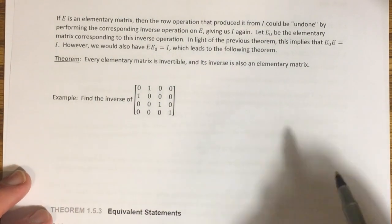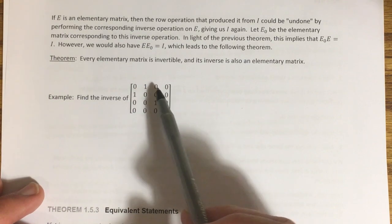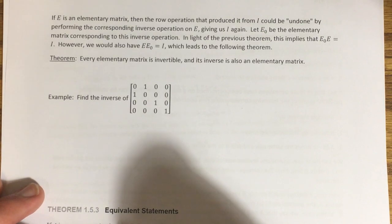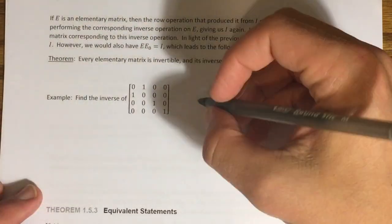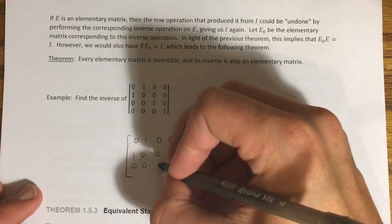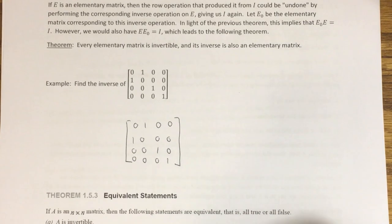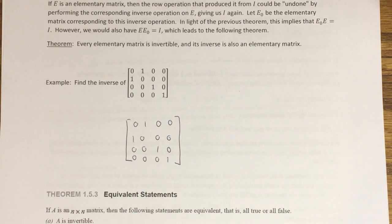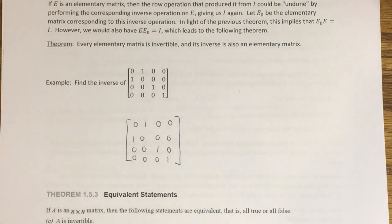Let's find the inverse of a given 4×4 elementary matrix. This elementary matrix came from interchanging the first two rows of the 4×4 identity matrix. To undo this operation, you reverse those same two rows. If I perform that inverse operation on the identity matrix, I get back the same matrix — it looks identical. So this is an interesting example showing that this particular elementary matrix is its own inverse. You can verify this by multiplying the two and checking you get the identity matrix.